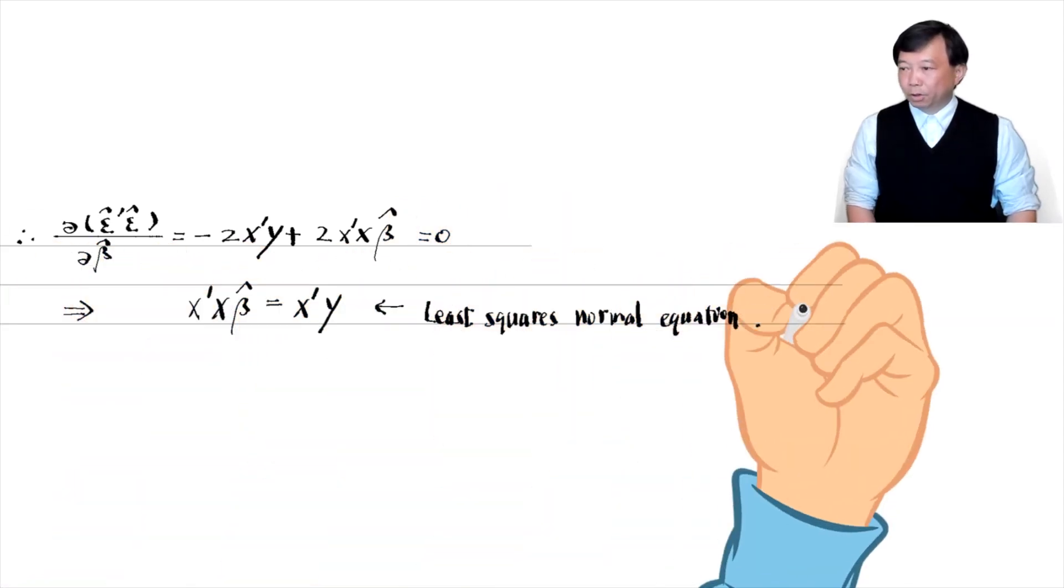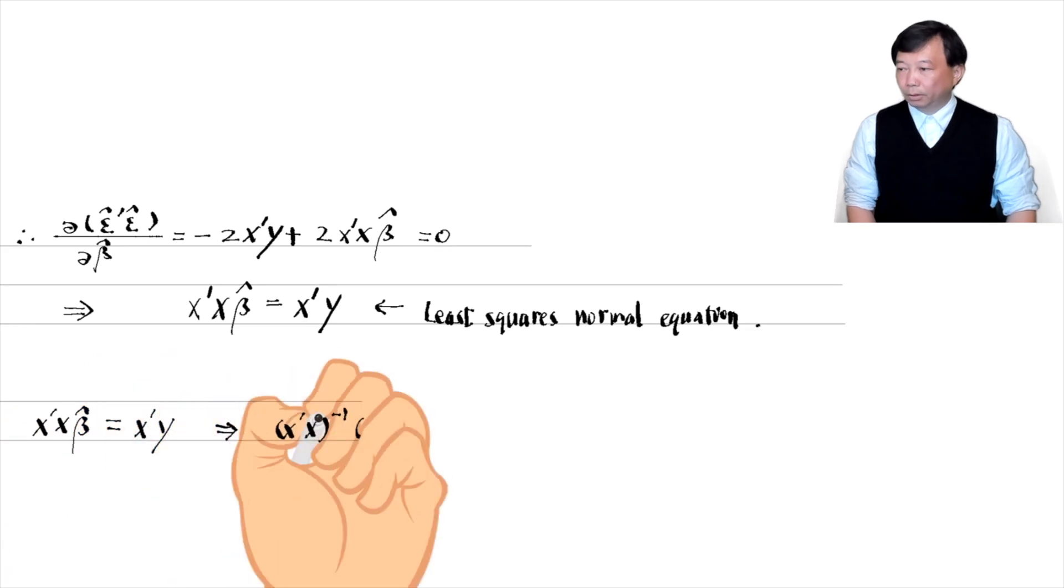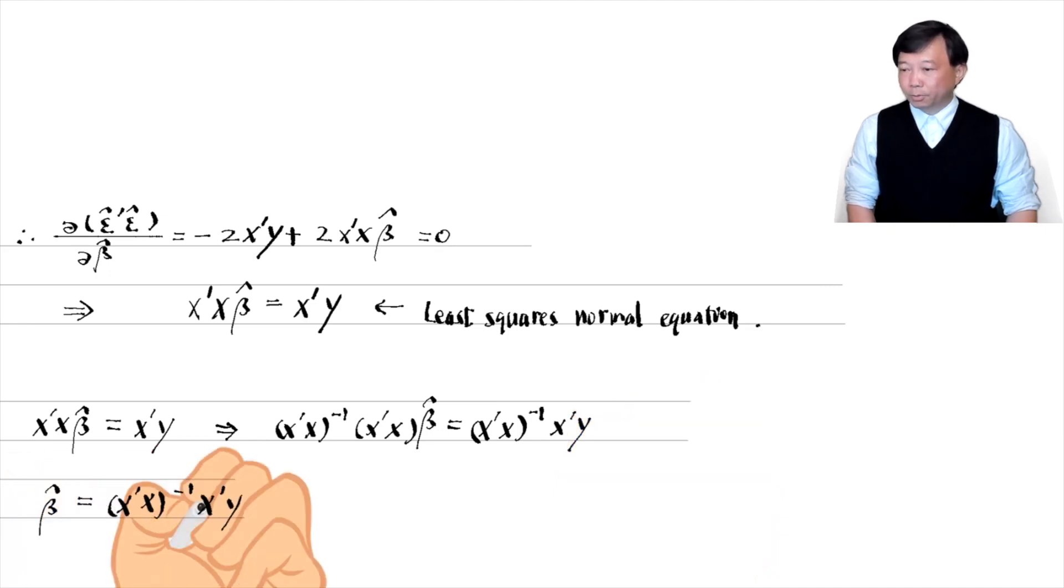Finally, the first order condition leads to the least squares normal equation. If the explanatory variable matrix x is full column rank, then the inverse of x prime times x exists, and the solution is as follows.